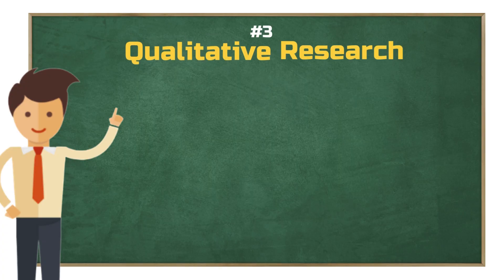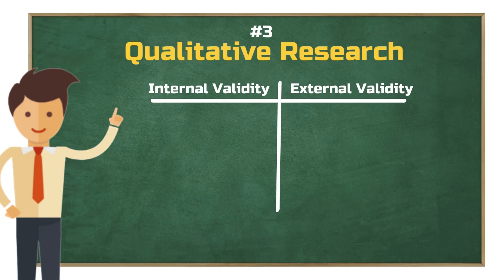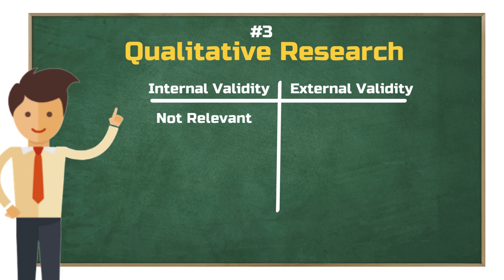Now let's talk qualitative research — things work a little differently here. In quantitative research, internal validity is the top priority. In qualitative research, it's basically off the table. Why? Because we're not testing causal relationships, so internal validity isn't relevant in this context. External validity, though? That can still matter, especially if you're trying to generalize your findings to a broader group and your sample was selected at random.